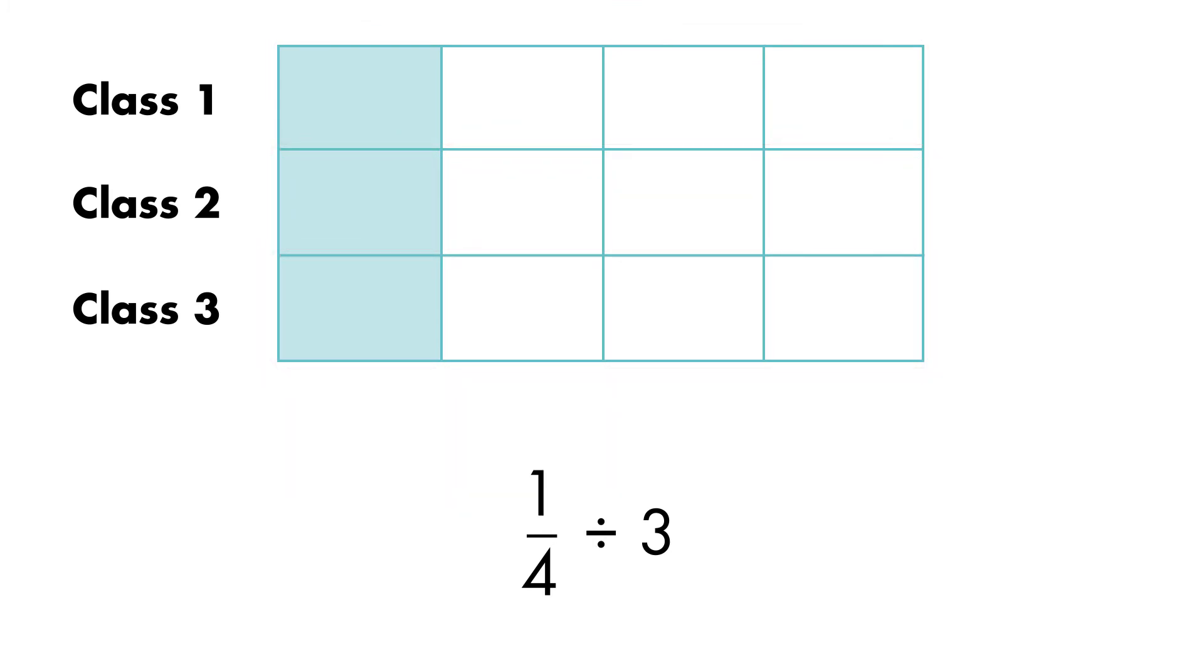Just one. So our numerator will be one. But the denominator will be smaller than fourths because we have divided the auditorium into smaller parts. Count all the squares. There are twelve. So our denominator will be twelve.